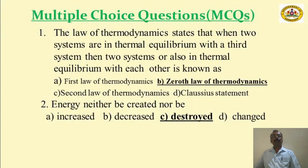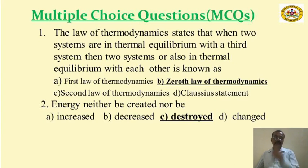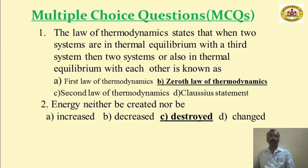MCQ: The law of thermodynamics that states when two systems are in thermal equilibrium with a third system then the two systems are also in thermal equilibrium with each other is the 0th law of thermodynamics — option B is the correct answer. Option A (1st law), option C (2nd law), and option D are wrong.